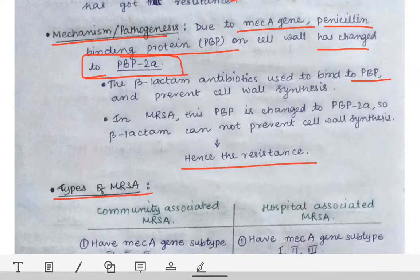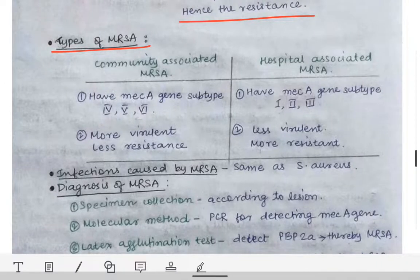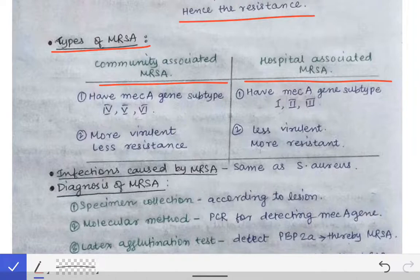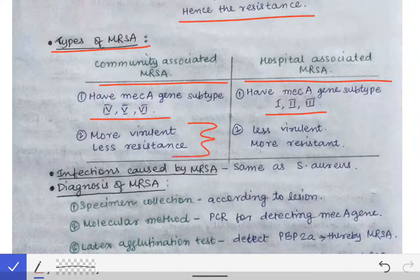MRSA can be classified into two types: community-associated MRSA and hospital-associated MRSA. The MEC-A gene subtypes in community-associated MRSA are 4, 5, and 6, while in hospital-associated MRSA they are 1, 2, and 3. Community-associated MRSA is more virulent and less resistant, whereas hospital-associated MRSA shows less virulence and more resistance.